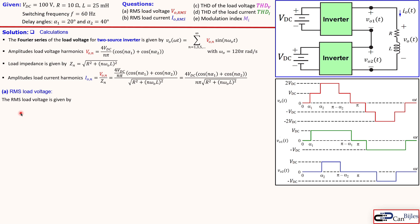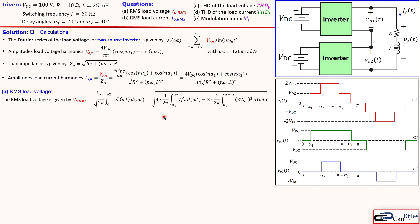For the RMS load voltage, we start from the general definition and use the waveform symmetry to speed up the calculation. Alpha1 creates a region that repeats four times in the period, and the region from alpha2 to π minus alpha2 repeats twice. So we split the integral into two pieces: four times the integral from alpha1 to alpha2 at amplitude V_DC, plus two times the integral from alpha2 to π minus alpha2 at amplitude 2V_DC.